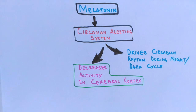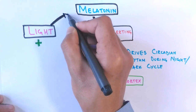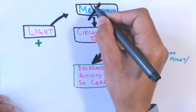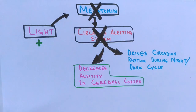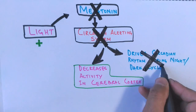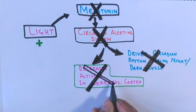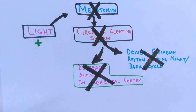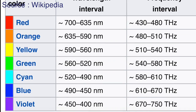During night or a dark cycle, sleep is promoted. But once light is present, melatonin secretion is inhibited, the circadian alerting system is deactivated, all circadian rhythms cease, the cerebral cortex becomes more active increasing wakefulness — and we will not feel sleepy.